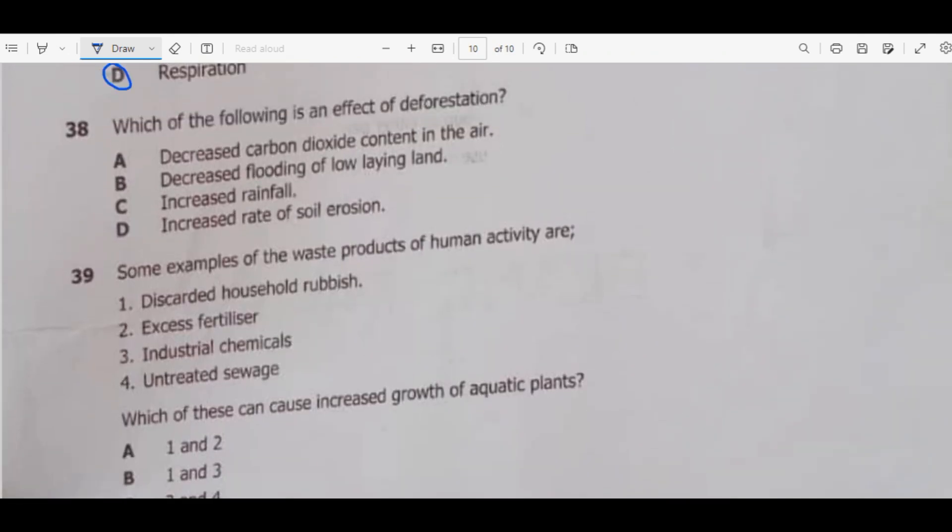Then question 38. Which of the following is an effect of deforestation? A, decrease carbon dioxide content in the air? No. B, decrease flooding of low-lying land? No. C, increase rainfall? No. D, increase rate of soil erosion. So the answer is D.